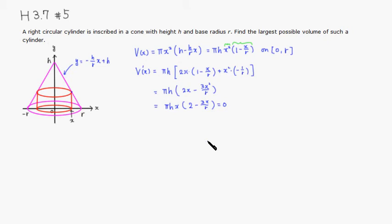Alright, so critical numbers are—first one is x equals 0, that's the easy one. Alright, so we have to set that equal to 0, so you have 2 minus 3x over r equals 0. Then you can subtract 2, so it's negative 3x over r equals negative 2. Alright, then you can multiply by the reciprocal of negative 3 over r, so it's negative r over 3, and then you get x isolated, so the negatives cancel out, giving 2r over 3.